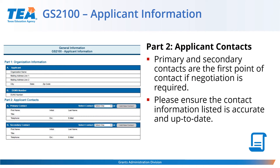The GS2100 schedule displays the applicant information including primary and secondary contacts for the grant. Because these individuals will be the first point of contact if negotiation is required, please ensure their contact information is accurate and up-to-date.